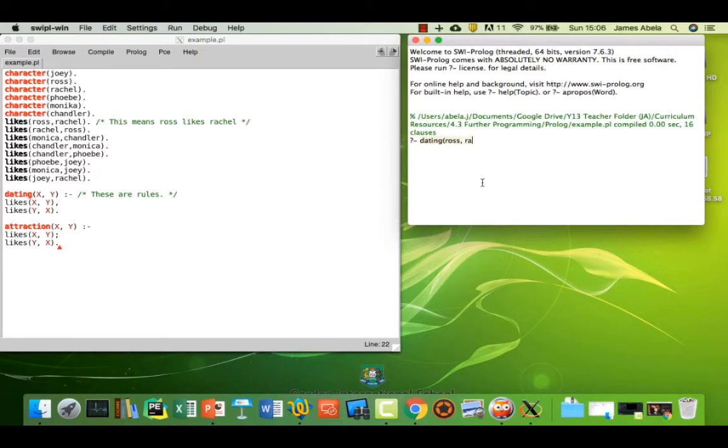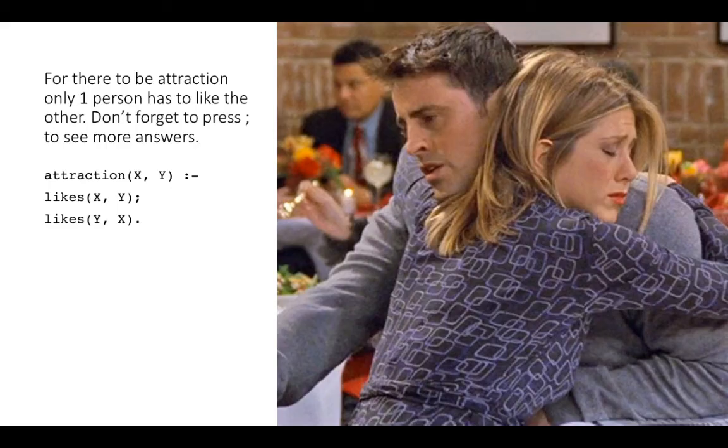Pretty much remember they were dating. True. Let's go and have a look at something else. Let's look at Rachel versus Ross. Of course it's going to be true because it's got to be both ways. Right for there to be attraction only one person has to like the other. Don't forget to press semicolon to see more answers.